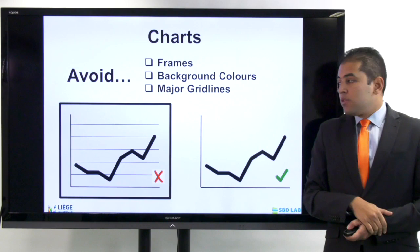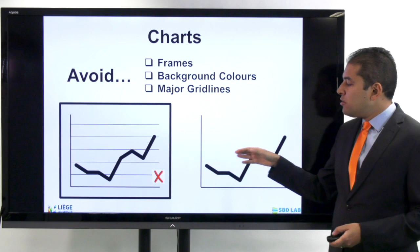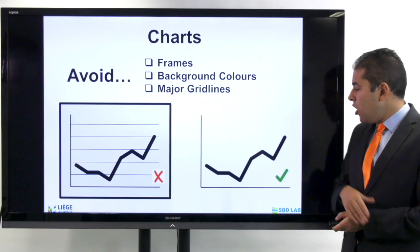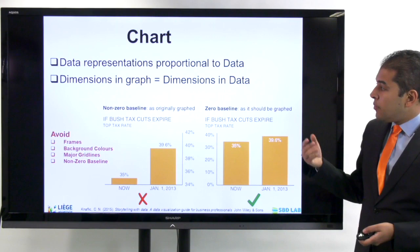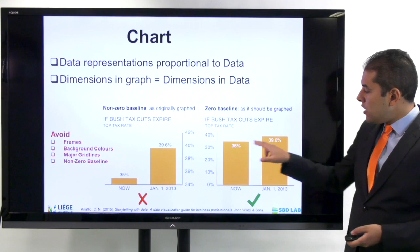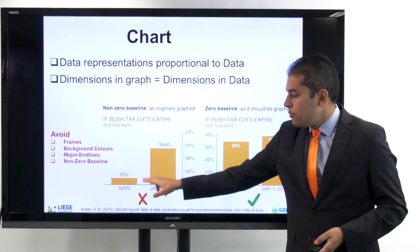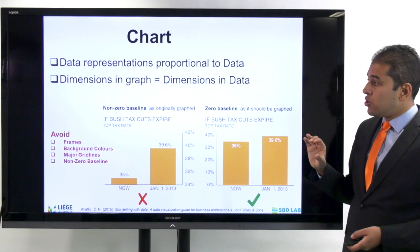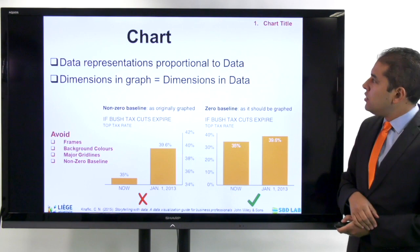In general, when you draw a graph, try to avoid having frames — this is not a good idea. Try to avoid having background colors — it's always recommended to leave a white background. Avoid major grid lines because they distract you from focusing on the main graph. Also, try always to represent the data in a proportional way. On the left side here, we started to represent the data from 34%, which is not appropriate. We prefer to start from zero so that we can really distinguish the difference, because chopping the data can convey wrong information. The dimension of your graphs should correspond to the dimension of the data.